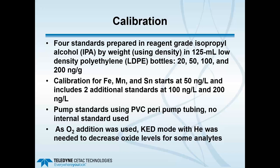For calibration, four standards were prepared by weight in reagent-grade isopropyl alcohol using low-density polyethylene bottles at 20, 50, 100, and 200 nanograms per gram. Calibration for iron, manganese, and tin started at 50 ng/g with two additional standards at 100 and 200. Standard PVC peristaltic pump tubing was used for the isopropyl alcohol. No internal standard was used. Oxygen addition was used to prevent carbon buildup on the sampler and skimmer cones of the ICP-MS, and KED mode with helium gas was needed to decrease oxide levels for some elements.